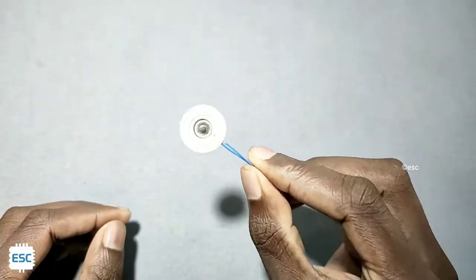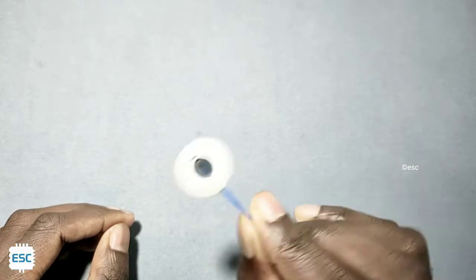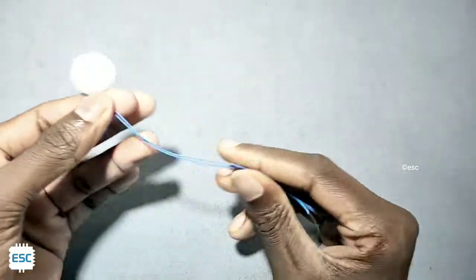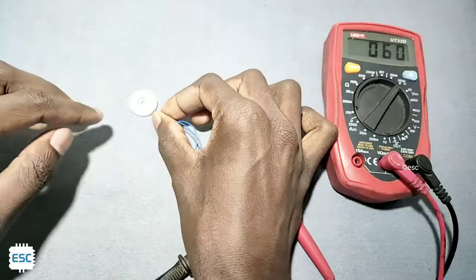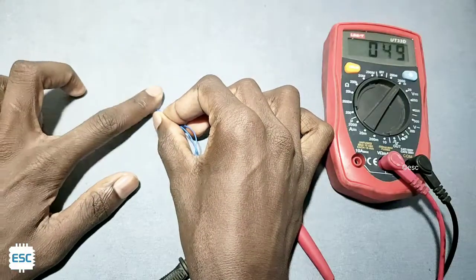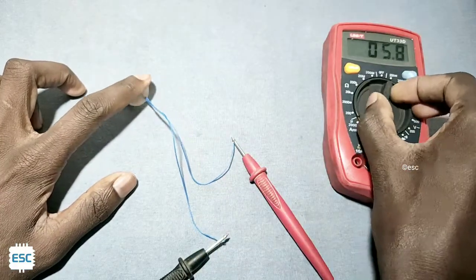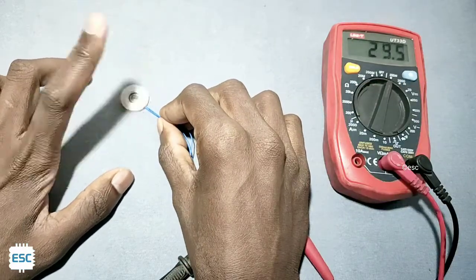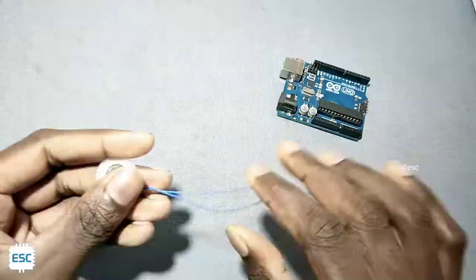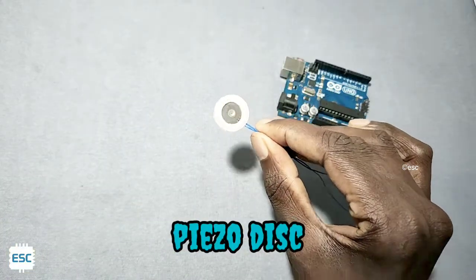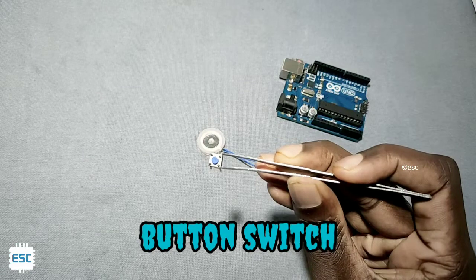The main component or sensor of this project is a piezoelectric disc. A piezoelectric disc is a transducer which converts mechanical vibration into corresponding voltage. You can see the change in voltage when I tap the piezoelectric disc. So we use this property to sense the knock.